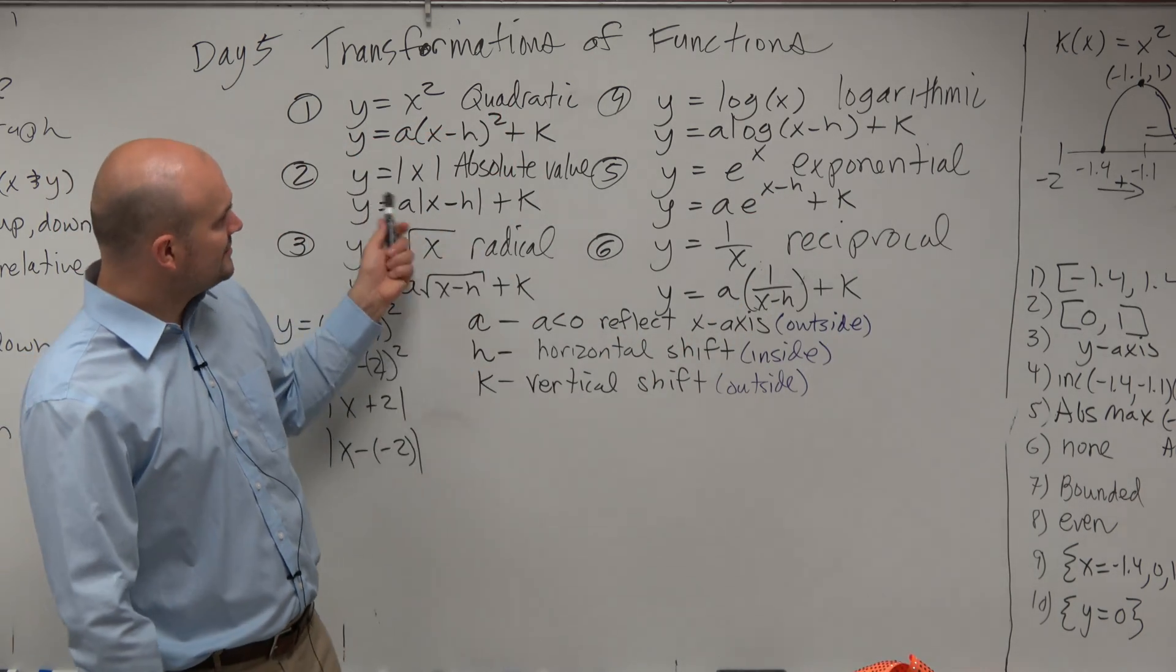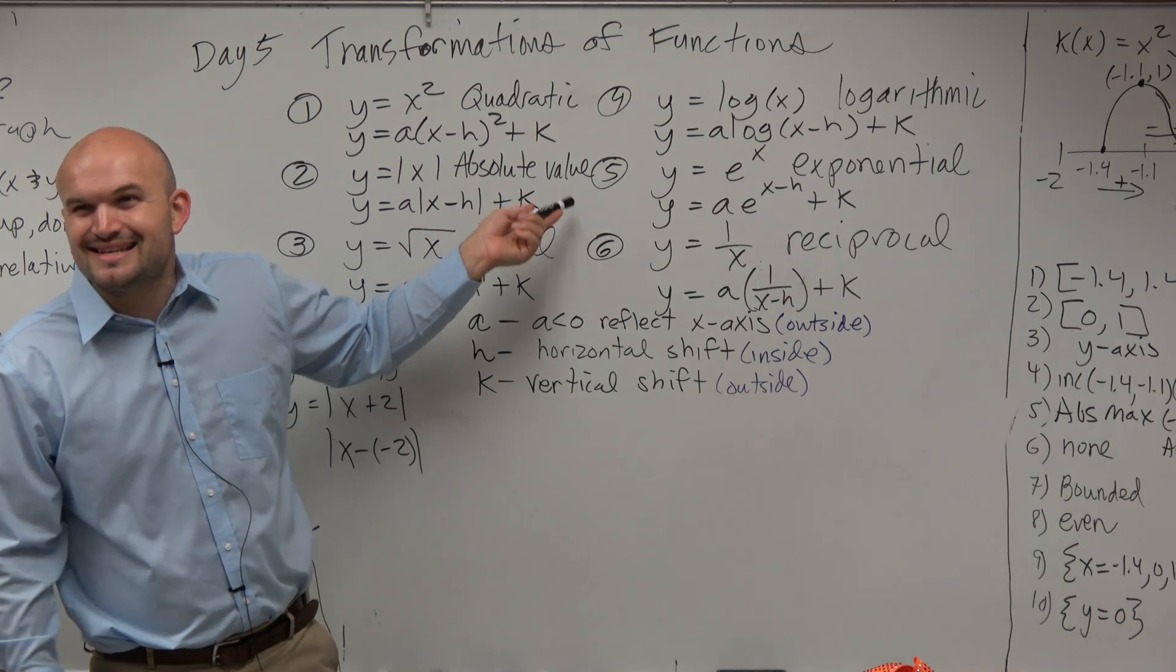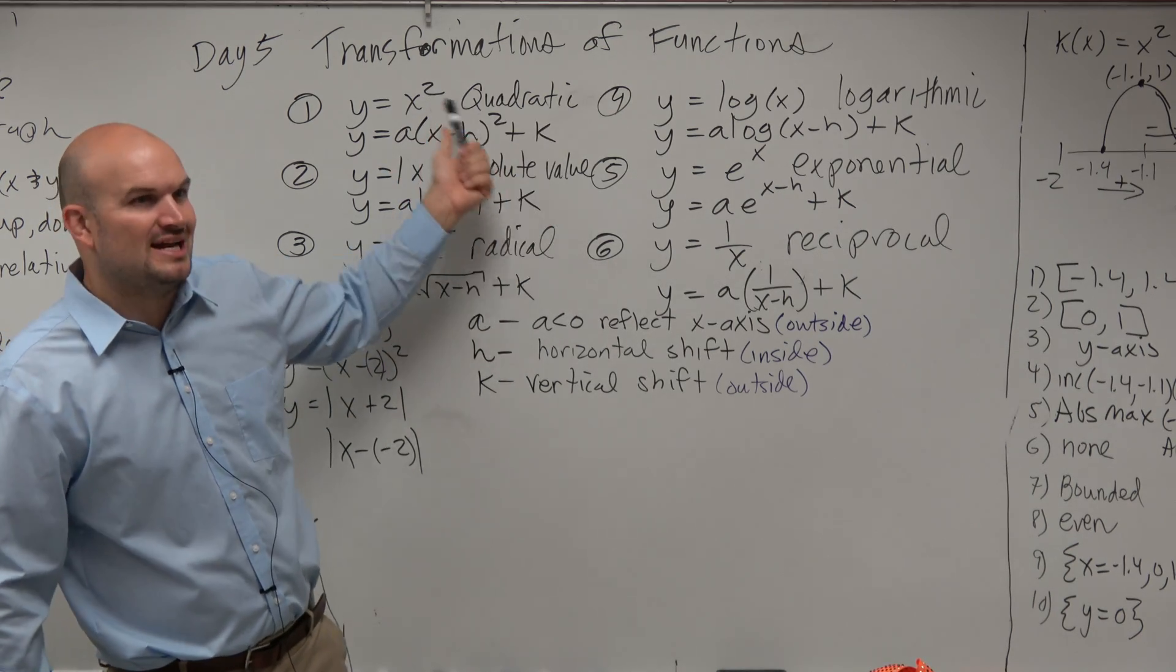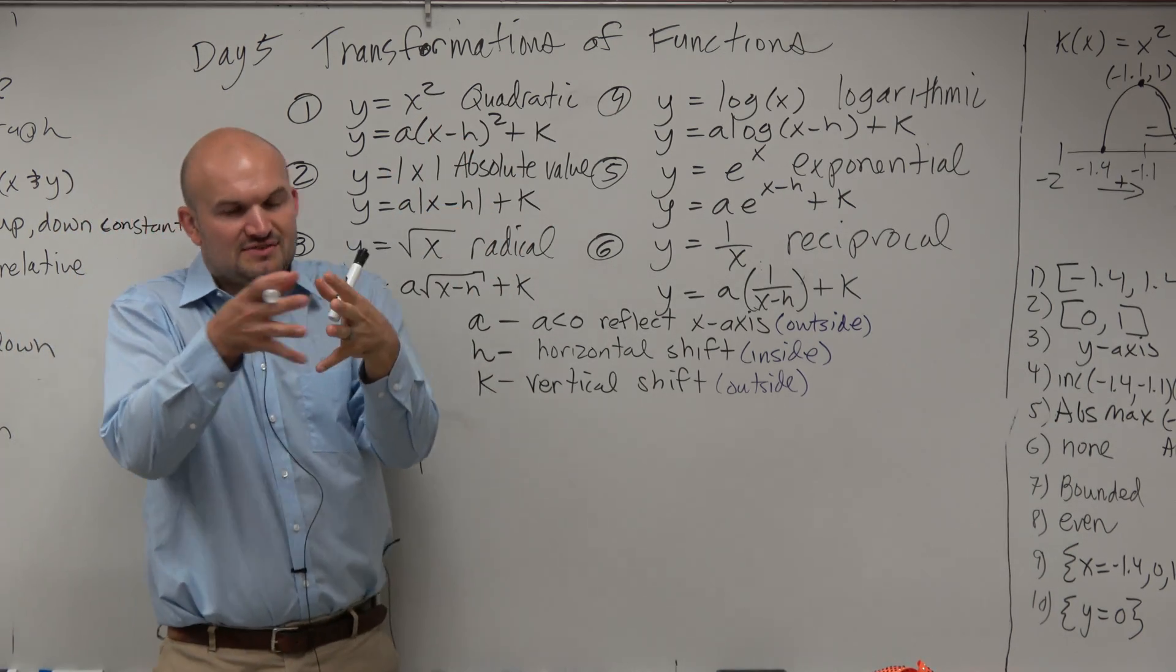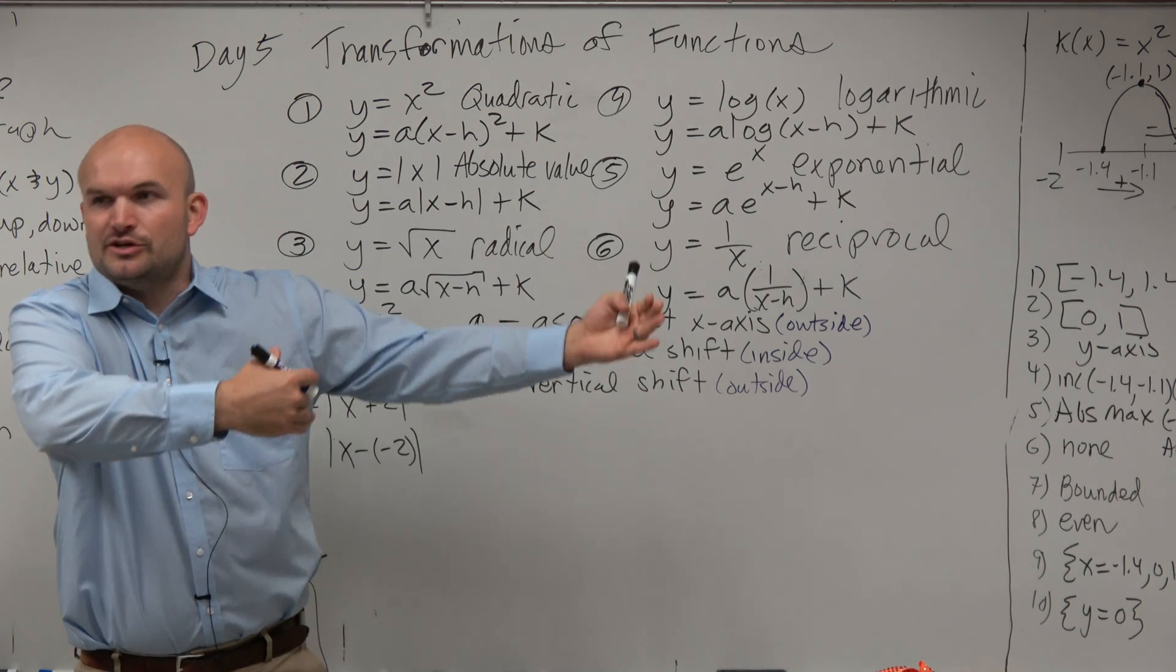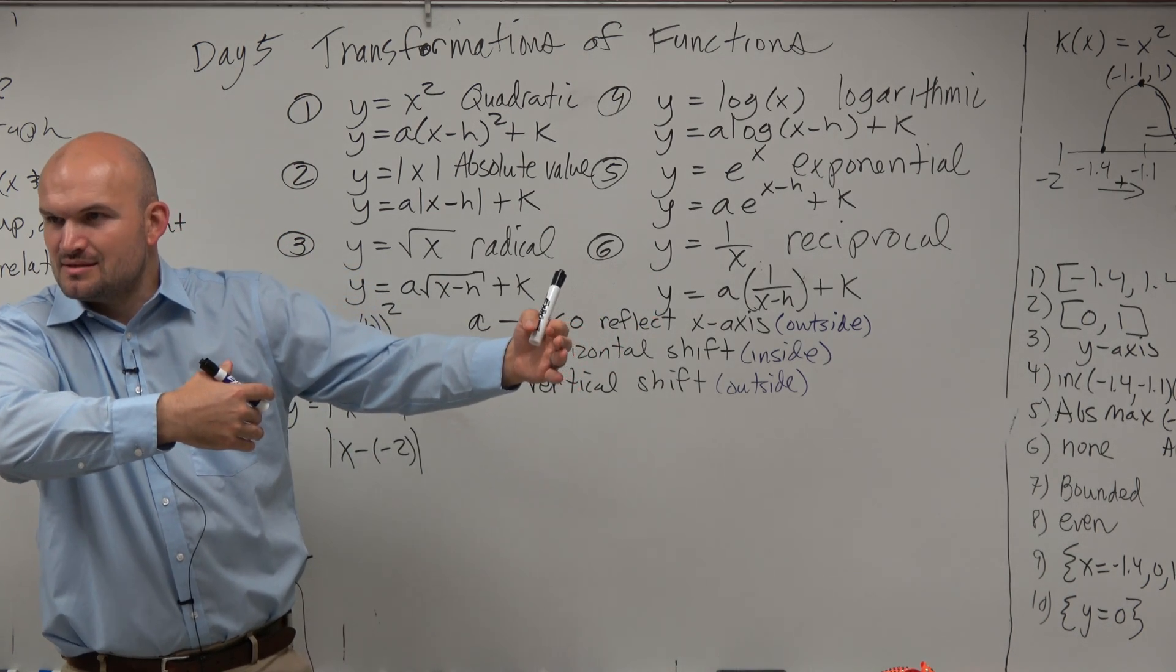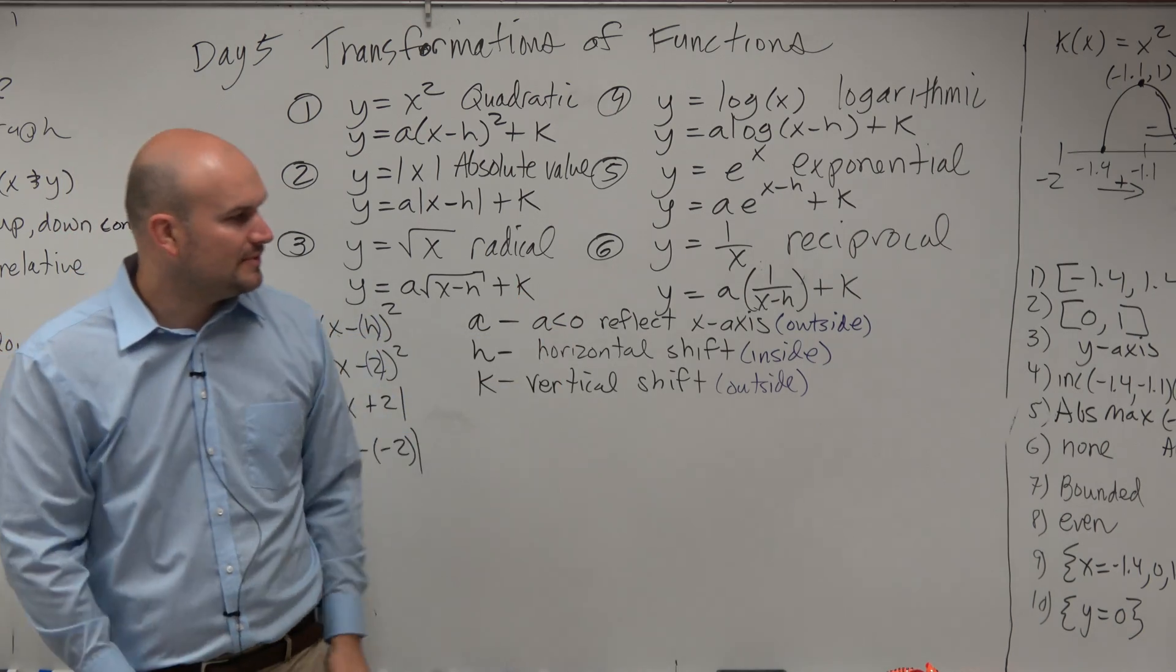But k, if k is positive, you're going up. K is the ligament, we're going down. But notice how, like, it's just outside. It doesn't change anything with the equation as far as, like, the formatting. It's just at the end, you're doing plus k. Does that kind of make sense? Yes? No? A little?